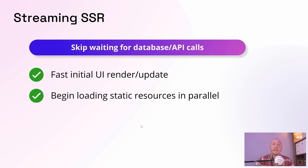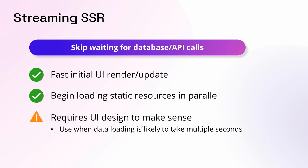In summary, streaming rendering allows you to do an initial fast UI update without the user having to wait for all queries to complete in the background. It also lets the browser start fetching static resources like CSS or JavaScript at the same time that database queries are happening on the back end. You should only put this on pages when it makes sense — not when loading takes only a microsecond, because the user would just see a strange flash. Use it when loading takes a few seconds and you want to render a sensible loading state like a spinner or placeholder.